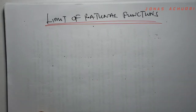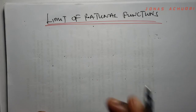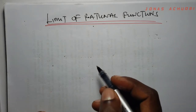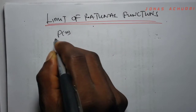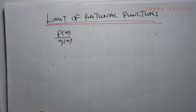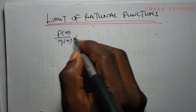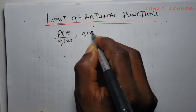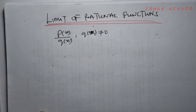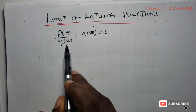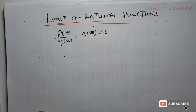Limit of rational functions. Recall that rational functions are functions of the form p(x) over q(x), where q(x) is not equal to 0, and p(x) and q(x) are polynomial functions.